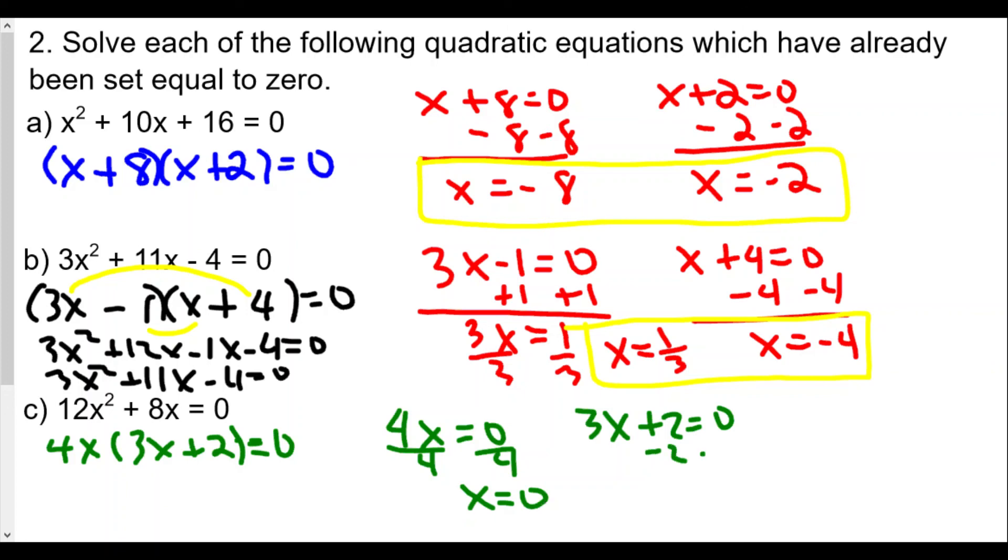Let's subtract 2 on both sides, we get 3x equals negative 2, divide both sides by 3, x is equal to negative 2 thirds. x equals 0 and x equals negative 2 thirds, and so this will be our solution for number 2 C.